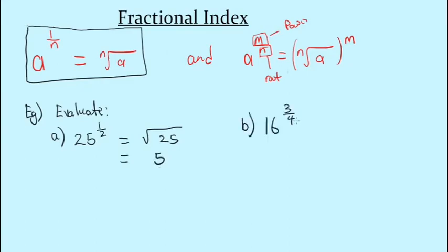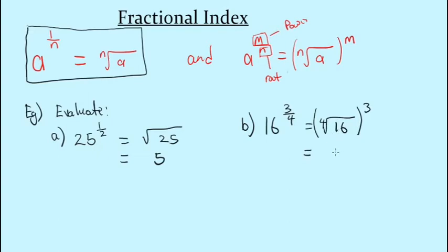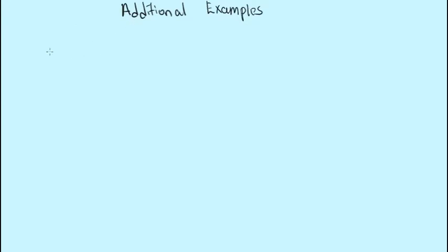For part b, the denominator tells us the type of root, so it would be the fourth root of 16, and the numerator tells us the power it is raised to — the cube power. Working out the root first: the fourth root of 16 is 2, and 2 raised to the cube power is 2³, which equals 8.